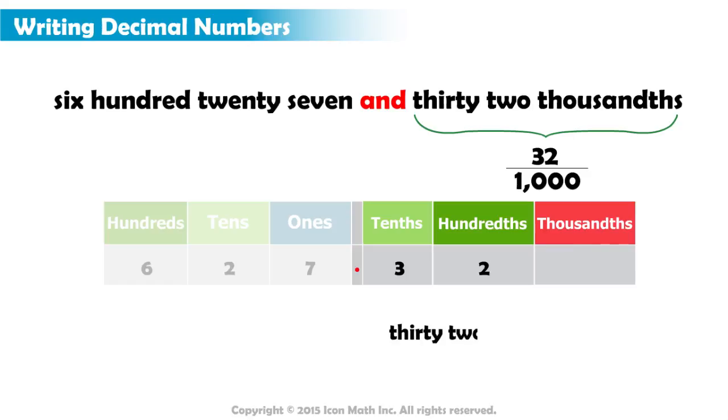We will have 32 hundredths. And that's wrong. To get the correct value, we should write a 0, and then 32.